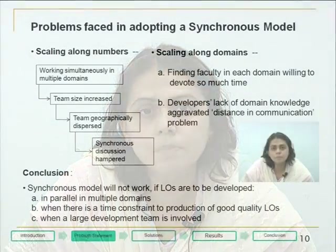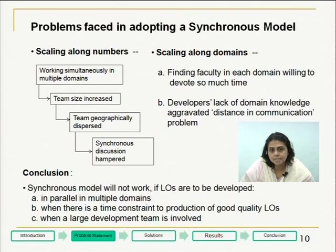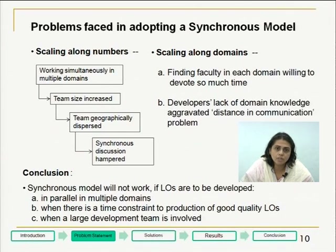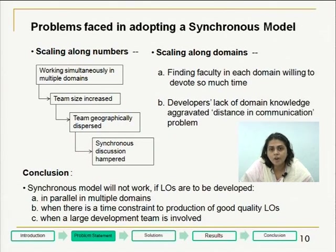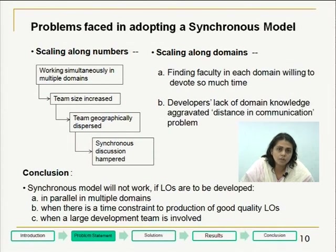When we adopted this synchronous model and tried to scale up along numbers, the problems we faced were: while working simultaneously in multiple domains, the team size increased, which led to space and infrastructure constraints. To solve this, the team had to become geographically dispersed. This geographical dispersion hampered face-to-face communication. When we tried to scale along domains, finding faculty in each domain willing to devote time to the labor-intensive task of producing an LO proved difficult. Also, the developers not having domain knowledge aggravated the communication problem.